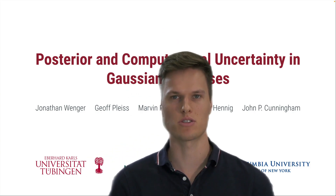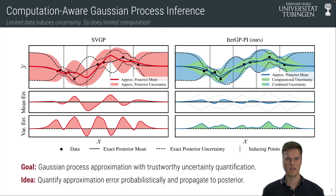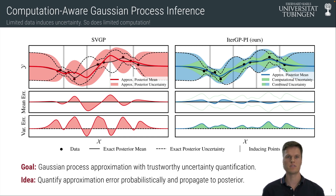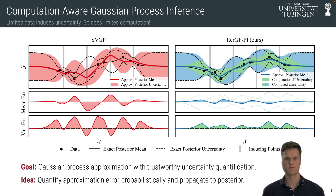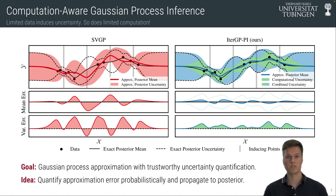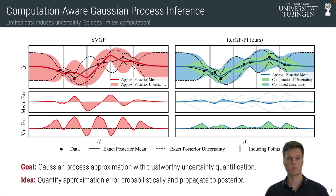What if I told you you can do exact uncertainty quantification in approximate Gaussian process regression? On the left here we have a commonly used Gaussian process approximation method based on inducing points and variational inference, and as you can see in red the approximate posterior mean is a little bit off of the mathematical posterior mean. That's expected because we only expend a limited amount of computation, but the uncertainty, particularly for the innermost inducing points, is way too low for what we're trying to estimate.